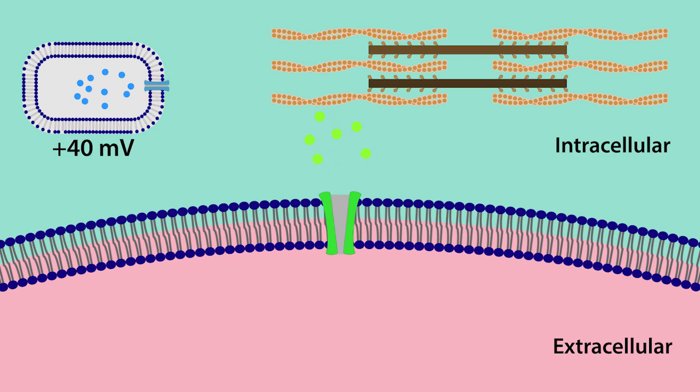This in turn opens voltage-gated calcium channels located on the sarcoplasmic reticulum, which allow calcium ions to enter the intracellular space and bind the actin chains of the myofilaments as you see here.